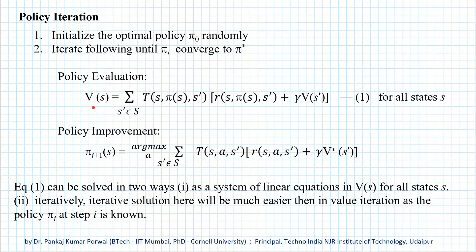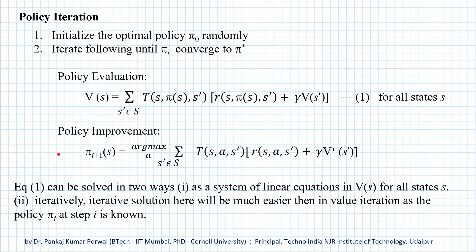Once we have the estimate of the state value function, we improve our policy by defining the improved policy as argmax over a of the expected state-action value — the Q-value — for state s and action a. Note that in policy evaluation we use the action according to the current policy π, whereas in policy improvement we consider all actions available in state s and select the action a for which the state-action value is maximum for the given state s.